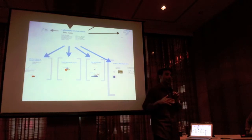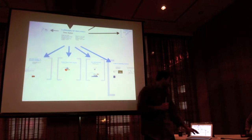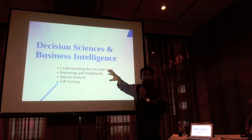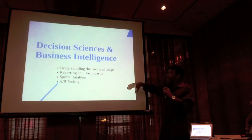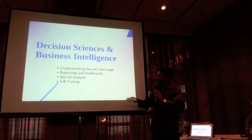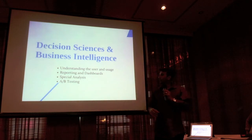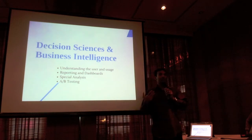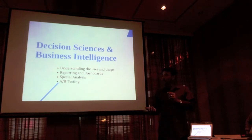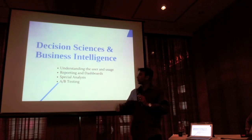I'll go through a number of case studies of companies that do very interesting things with this. First, decision sciences and business intelligence — these are the people that understand the user and the usage. They figure out the click tracks, the segmentation. They prepare all the reports and dashboards. They do special analysis to figure out what's the next country you should roll your product out in, should you try to deploy a new product, what's the right phasing, and A/B testing as well.